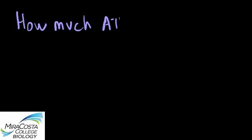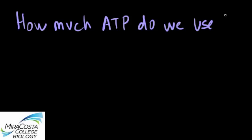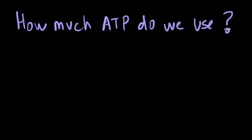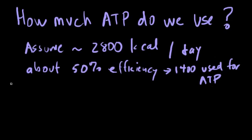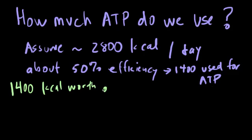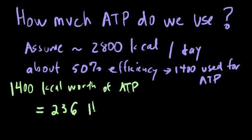The amazing statistic I'd like to share is based on a calculation made by Professor Bailey on just how much ATP is used in our bodies. Based on a typical person's daily caloric intake and assuming that about 50% of these calories get converted into ATP energy, the bottom line is that our cells have to use about 236 pounds of ATP per day — that's 10 million molecules of ATP per cell every second.